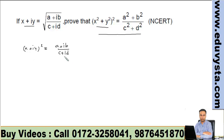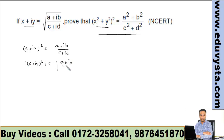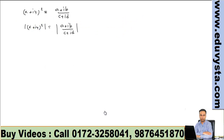Now these two complex numbers are equal, so we compare their moduli. We have |x + iy|² = |(a + ib)/(c + id)|.